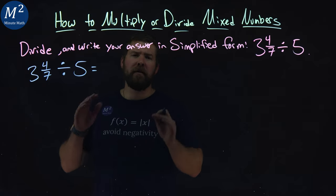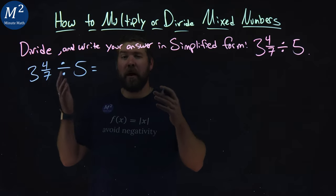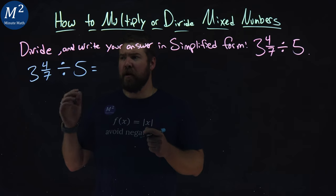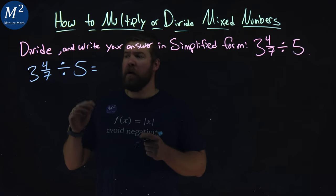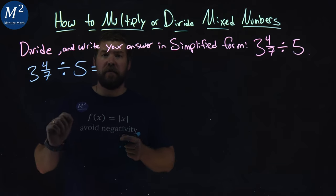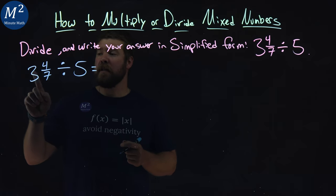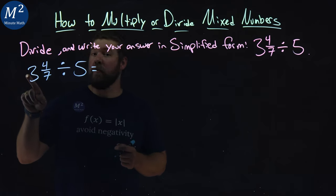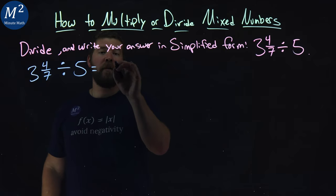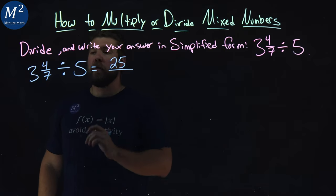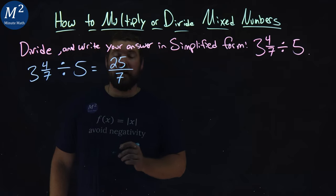Well, I first want to convert this to be improper fractions, okay, each part, left and right. The left, 3 and 4/7ths. Well, to do that, 7 times 3 gives me 21, plus 4 is 25, over our denominator, which is just 7.